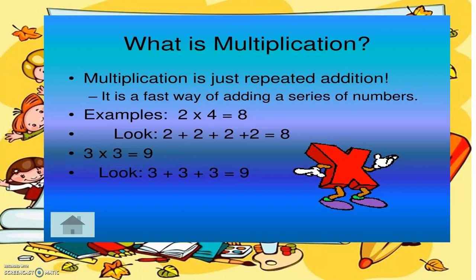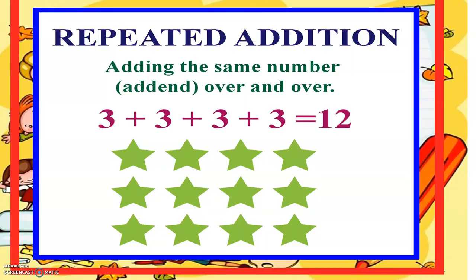Another example: three times three equals nine, or three plus three plus three equals nine. That's multiplication as repeated addition — adding the same number over and over. So three plus three plus three plus three equals twelve, or three times four. One, two, three, four — counting up to twelve.